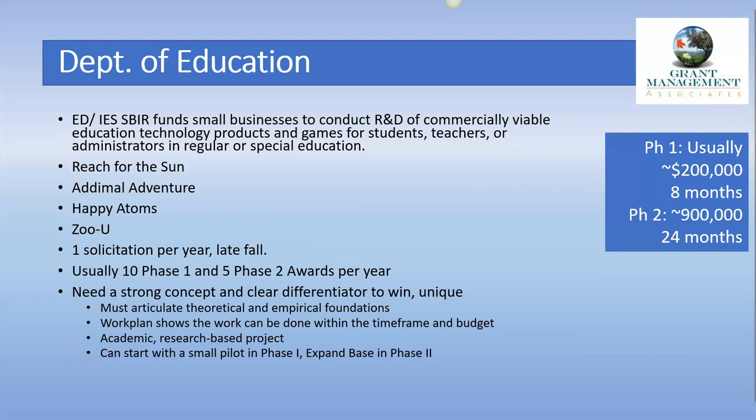The Department of Education usually does one solicitation each year in the late fall. They have usually 10 Phase 1 and 5 Phase 2 awards each year. To win in this agency you really need a strong concept and a clear differentiator — to be competitive you really have to articulate the theoretical and empirical foundations for your concepts.